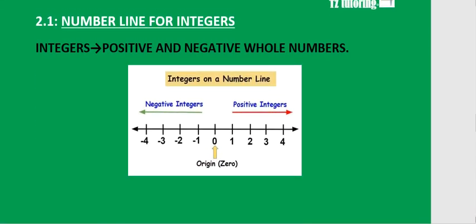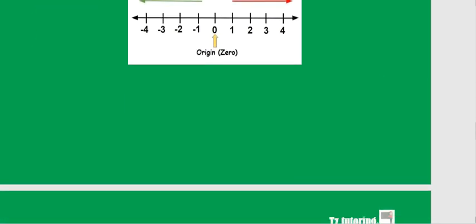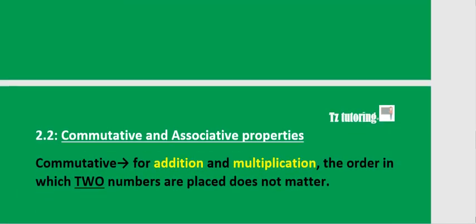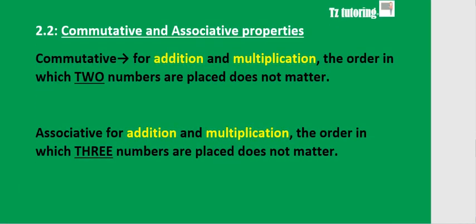Integers are whole numbers that can be positive or negative. Whole numbers can only be positive, but integers can be positive and negative whole numbers.